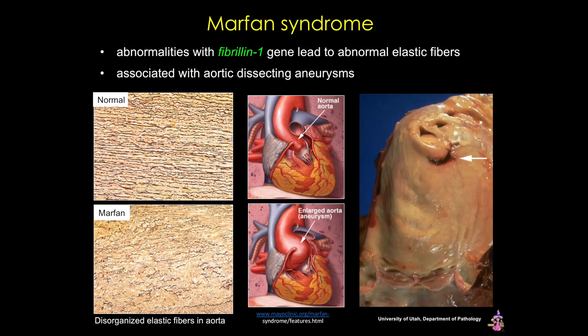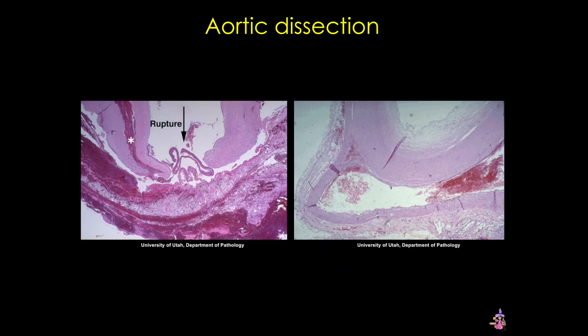Here's an example of an aortic dissection where the tear is above the aortic valve. Shown here are several examples of aortic dissection, both showing the tear extending through the tunica media. The blood in these cases can either dissect down to the coronary arteries and shut them off, or dissect up to close off the carotids. In either case, this is an extreme emergency and can quickly lead to death.